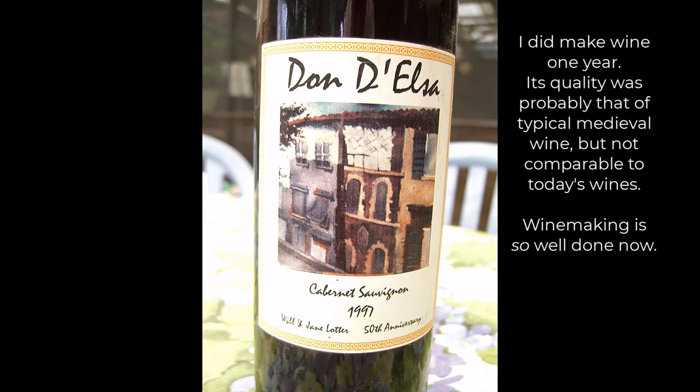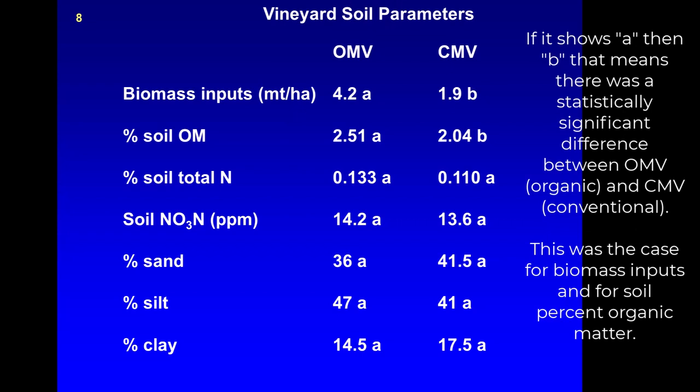Some of the vineyard owners were really angry at the University of California for recommending the AXR1 rootstock. But everyone I talked to said that the AXR1 is an excellent rootstock that grew the vines really well, better than anything else. That's why it was used and recommended by the University of California.